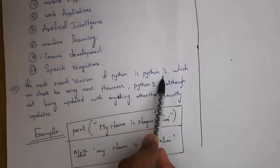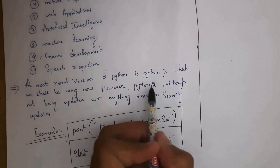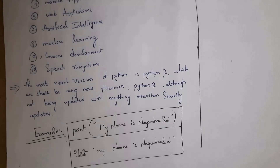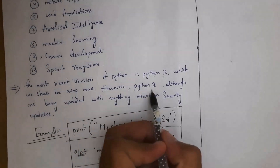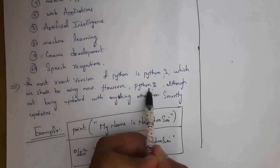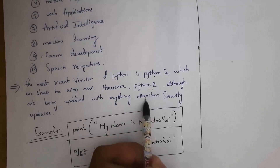The most recent version of Python is Python 3, which we are using right now. Python 2 is the old version and Python 3 is the new version. Python 3 has many more features compared to Python 2. Python 2 is no longer being updated with new features except for security fixes.